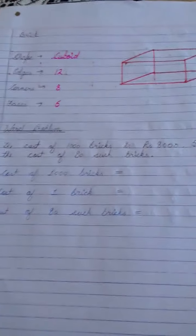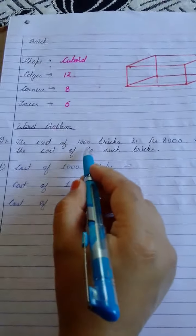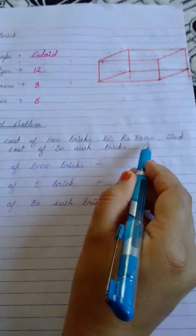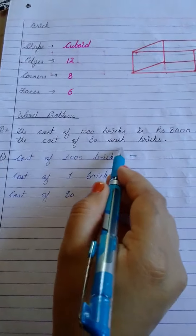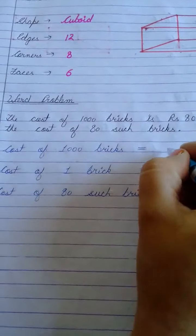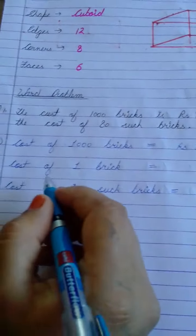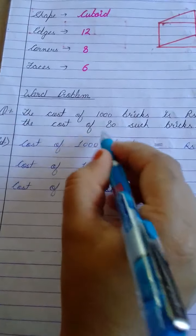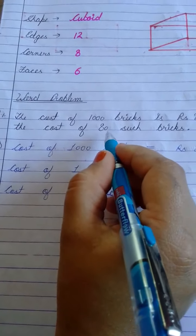Now let us do some word problems based on this. See the question is, the cost of one thousand bricks is rupees eight thousand. Find the cost of eighty such bricks. So first of all, in order to calculate the cost of eighty bricks, you should know the cost of one brick.